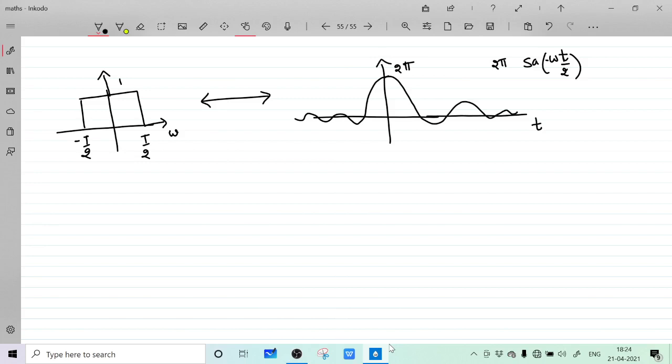You can see this signal is an everlasting signal from minus infinity to plus infinity. This is also having some values for less than zero, so it can be seen that this signal is non-causal because it is there for positive time as well as negative time.